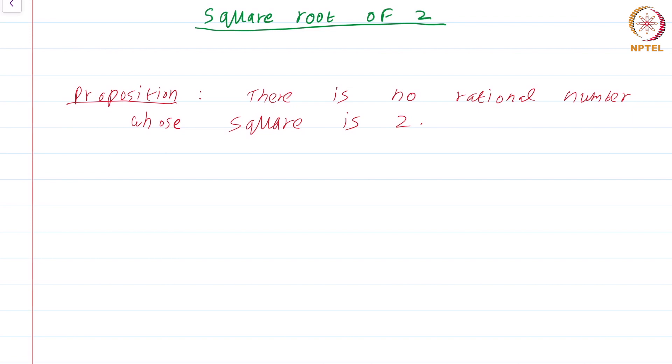I am not stating that square root of 2 is irrational. We do not even know what irrational numbers are so far. What I am stating is if you take a rational number and square it, you cannot possibly get the number 2. Let us see the proof.